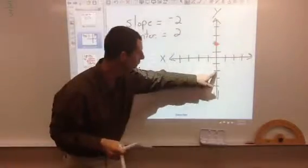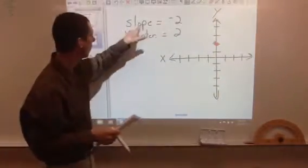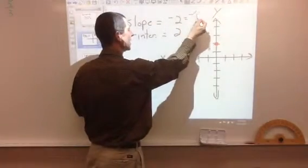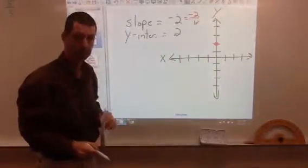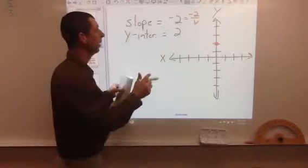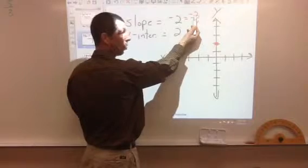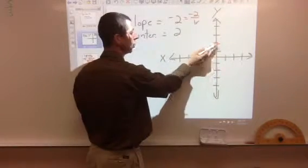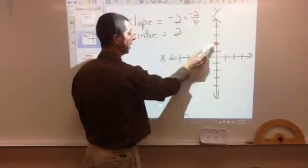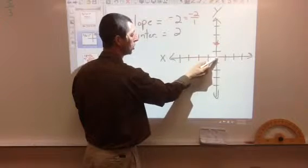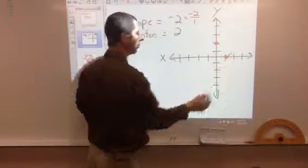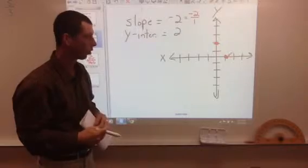If it was negative 2, we'd put it down here. Now we have a slope of negative 2. What I tell students to do is to write this as a fraction, negative 2 over 1. And now you can go ahead and graph the second point here. What this means is this is the change in y, and this is the change in x. So what we need to do is, this is how we're changing y. We're going down 2 because it's a negative 2. So from here, we go down 1, 2, and this is a positive 1, so we go over to the right 1. That would be the next point on our coordinate grid.